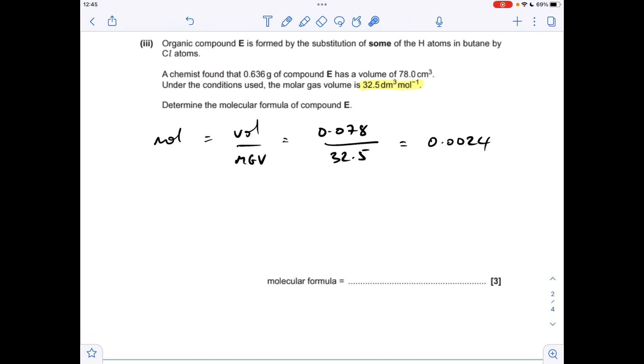Well, we know the mass of E, so we can work out its MR, so mass over moles gets us 265. Now we know there's four carbons in this, so if we take out 48 for that, it gets us to 217, and then if we divide that by 35.5, so we can see how many chlorines are in this thing, it gets us 6.11, but basically that's telling us that there are six chlorines in E.